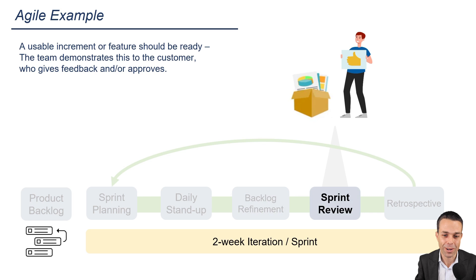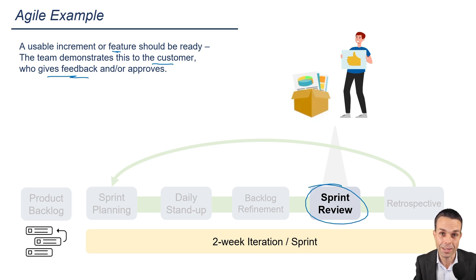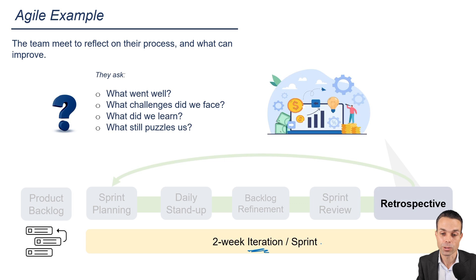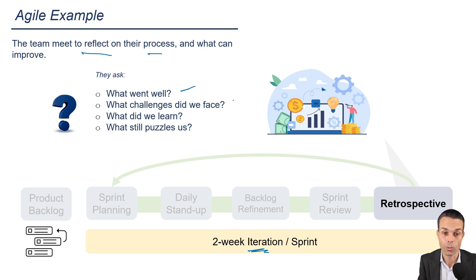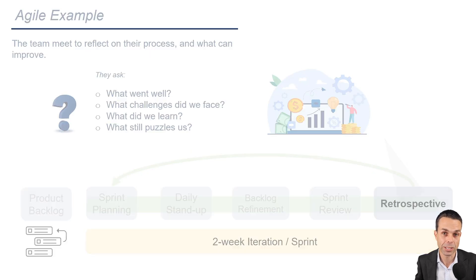During our iteration, we've worked hard and completed something we can actually show to the customer — a usable increment or usable feature. The customer reviews it, gives their feedback, and approves it, or maybe we need to do a little more work. All of this is done during the iteration review or sprint review. Then at the end of the iteration, we review our way of working as a team during the retrospective: what went well, what didn't go well, what should we improve, what did we learn, and what still puzzles us? We take those improvements and make sure they happen for the next iteration, so we're always continuously improving.